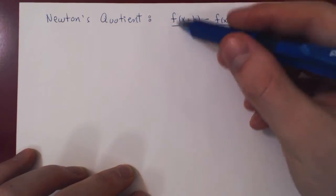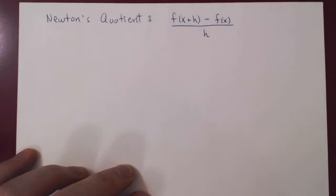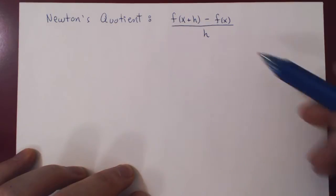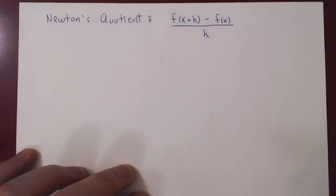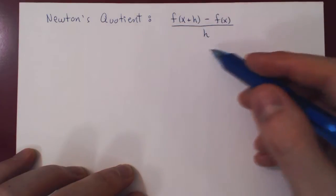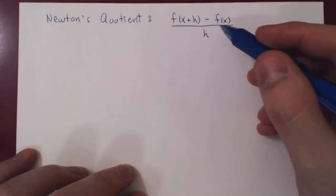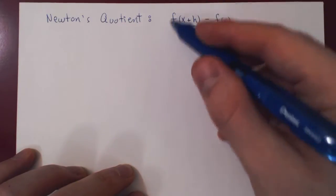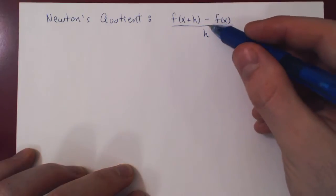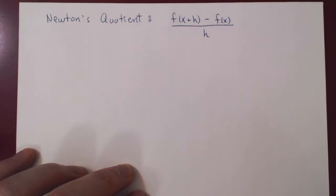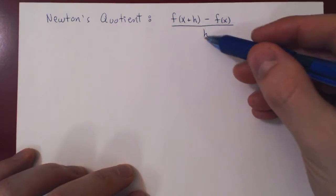This may not look like much right now, but when we discuss later in this course the idea of the derivative of a function, this will be extremely important. There will be two steps in the process: first, compute and simplify Newton's quotient, and then let the variable h approach zero — let h shrink to zero.